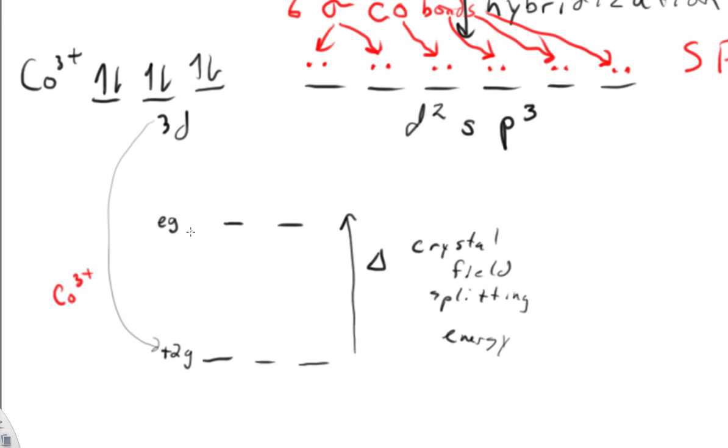So this is the EG sublevel of 3D and this is T2G. The T, the G and the E come from German words and it won't be helpful to give you those names right now. But you can see right here we've got pairing.